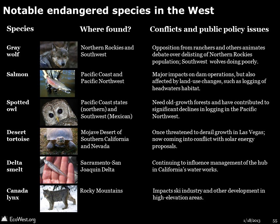Now let's turn to a subset of imperiled species — the plants and animals that have received protection under the Endangered Species Act, or ESA. There are more than 1,200 endangered species in the US, but a small subset tends to generate the lion's share of attention. Here are some of the notable endangered species in the West, where they're found, and how they've figured into public policy debates. Although species protected by the ESA sometimes do have significant economic and regulatory impacts, most of the plants and animals protected by the law are not lightning rods for controversy.